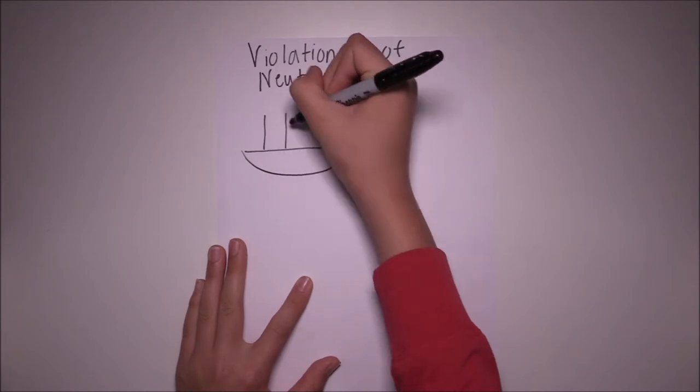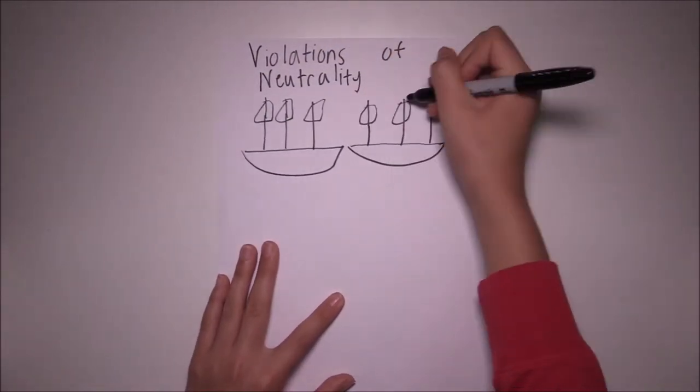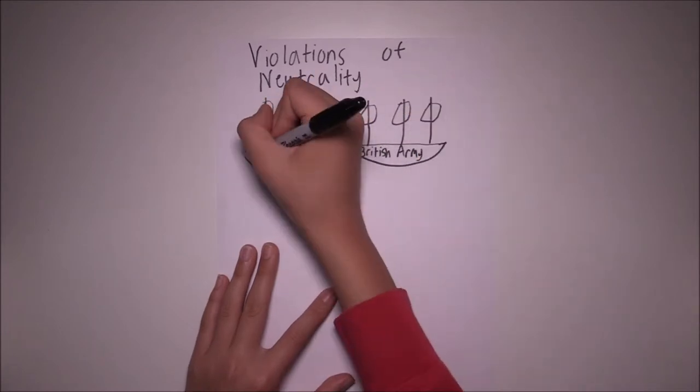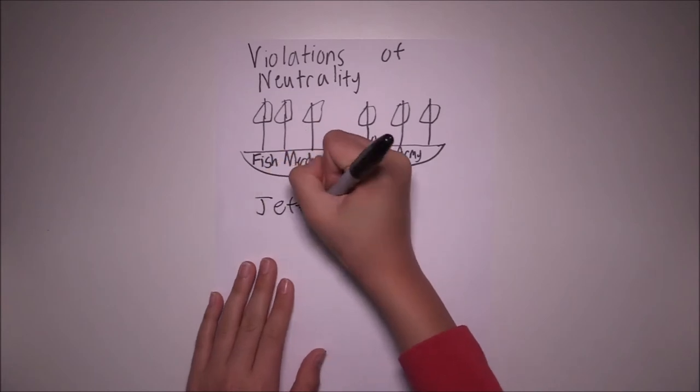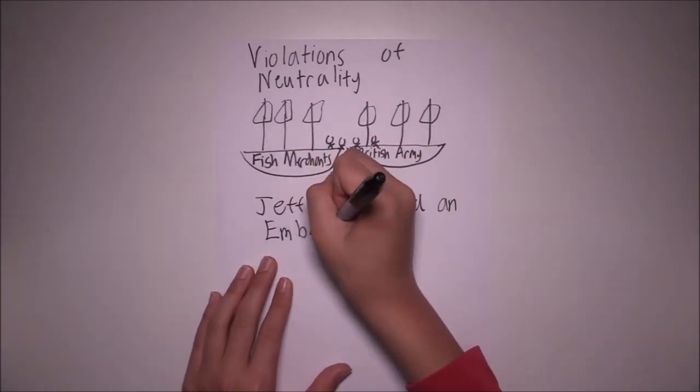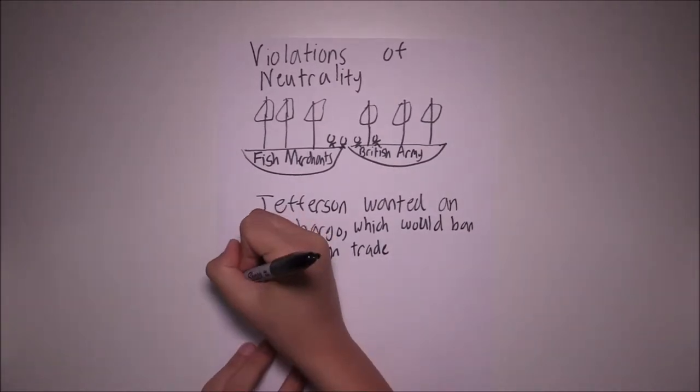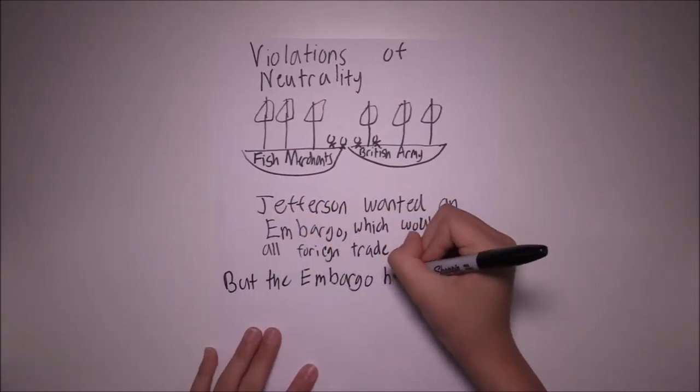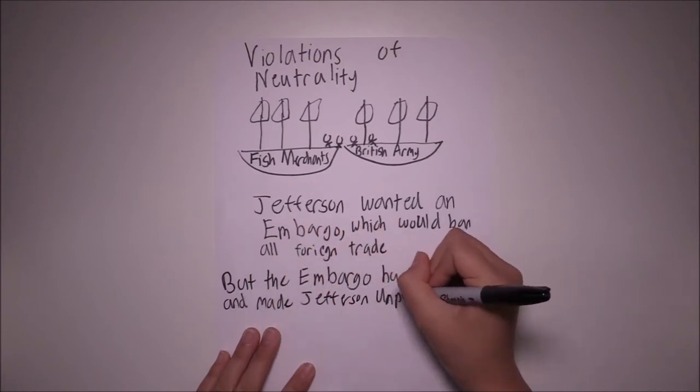So what were these violations of neutrality? Basically, British ships began stopping American ships and searching for former British soldiers to join into their army. In order to respond to Britain, Jefferson wanted an embargo, or banning of trade, with the whole world. The law devastated U.S. merchants and Jefferson's popularity, and didn't even affect Britain.